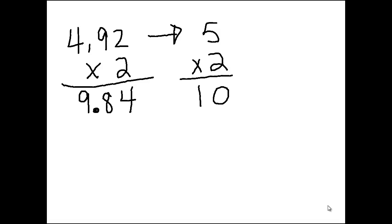So we can tell that this product is very reasonable. I want you to also notice that in our problem, we have two numbers to the right of our decimal point. In our product, we also have two numbers to the right of our decimal point.